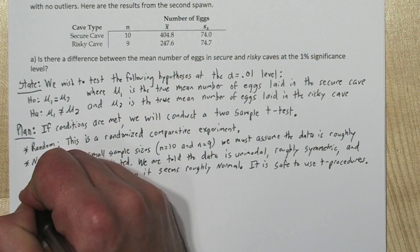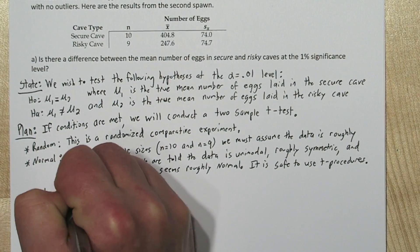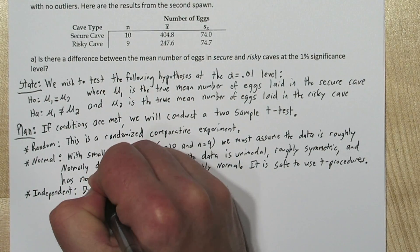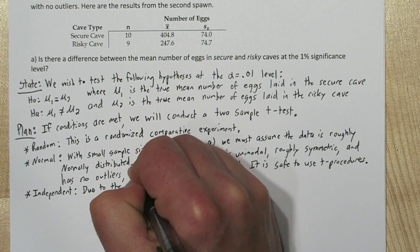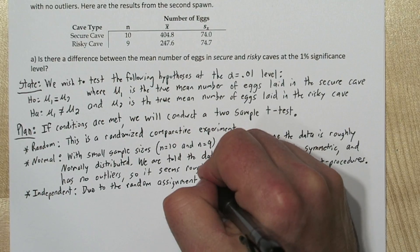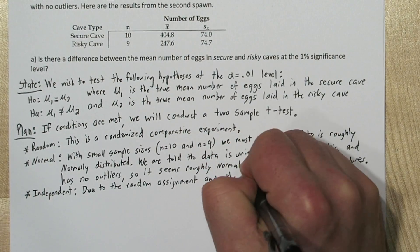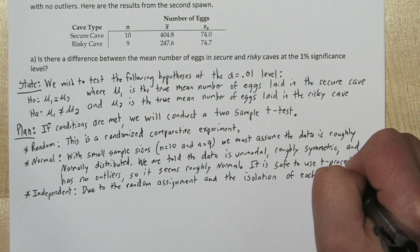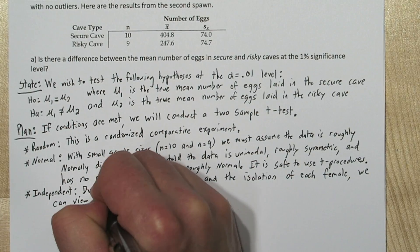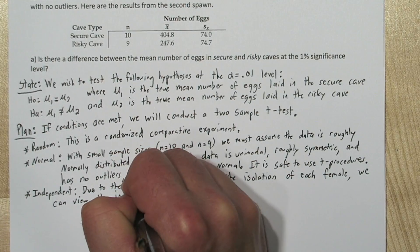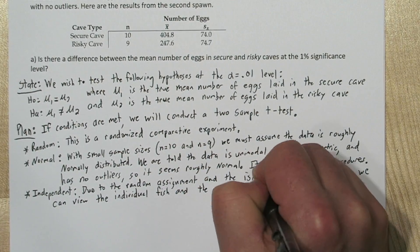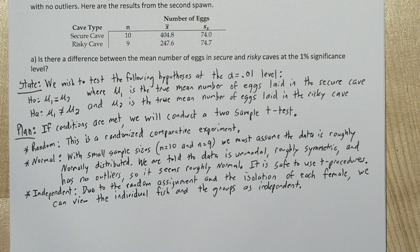For the independent condition, we need to check that the number of eggs each fish laid was independent of the others, and also that the secure cave and risky cave groups were independent. Due to the random assignment and the isolation of each female — the researcher made sure the fish could not see each other from tank to tank — we can view the individual fish and the groups as independent.